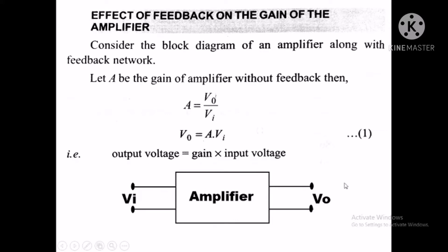Input is Vi, output is V0. If we write gain, gain is represented as A. Gain is nothing but the output upon input. Let A be the gain of amplifier without feedback. Then A equals V0 by Vi, or this equation can also be written as V0 equals A into Vi. This is considered as equation number 1.